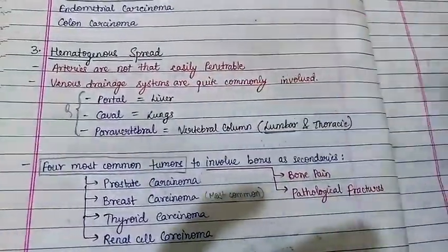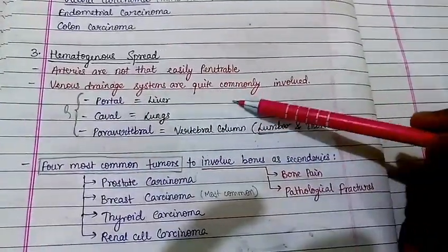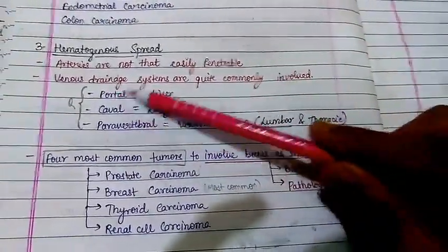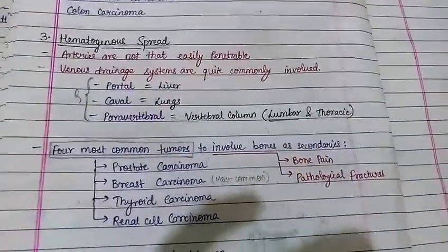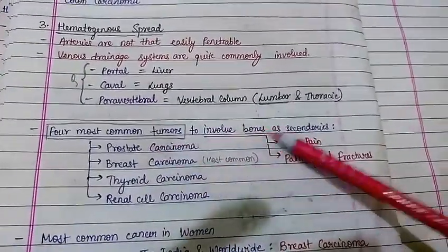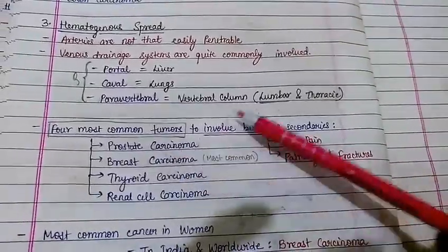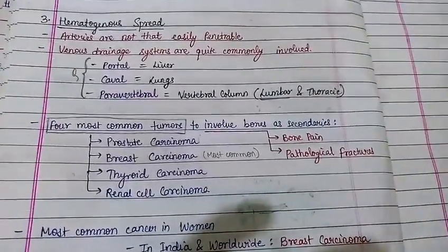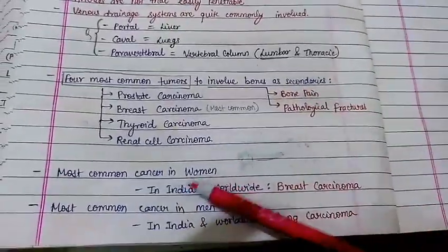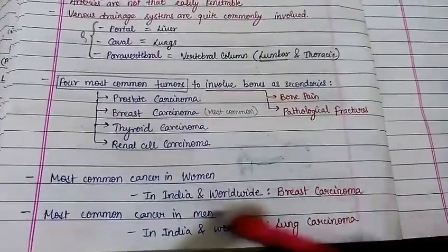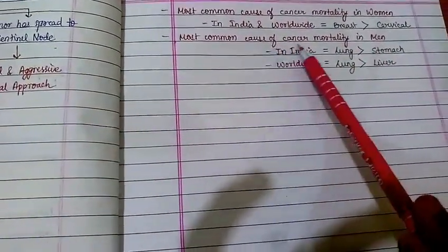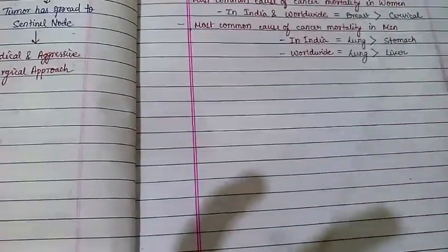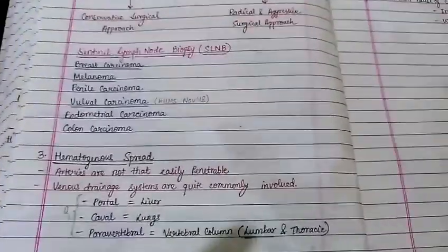For hematogenous spread, arteries are not easily penetrable but venous systems are commonly involved. Portal veins drain to the liver, caval veins drain to the lungs. The most common tumors involving bones as secondaries are prostate carcinoma, breast carcinoma, thyroid carcinoma, and renal cell carcinoma. Most common cancer in women in India: breast carcinoma. Most common cancer in men: lung carcinoma. Most common cause of cancer mortality in women: breast. Most common cause of cancer mortality in men in India and worldwide: lung.